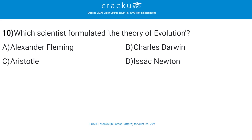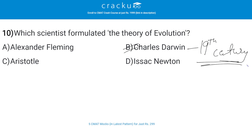Which scientist formulated the theory of evolution? The correct answer is B, Charles Darwin. This theory was proposed in the 19th century by Charles Darwin and Alfred Russel Wallace.